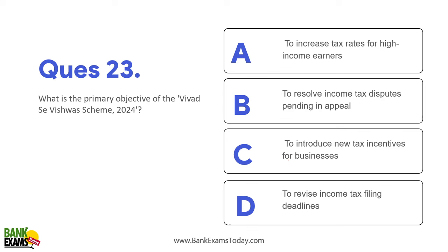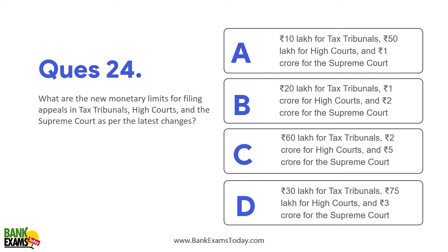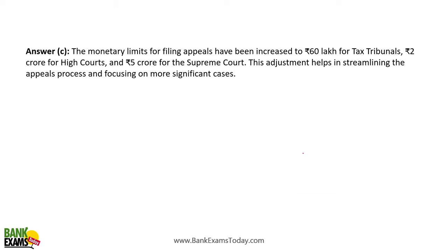The primary objective of the Vivad Se Vishwas scheme is to resolve income tax disputes pending in appeal — a separate session will cover this. What are the new monetary limits for filing appeals in tax tribunals, high courts, and the Supreme Court? As per the latest changes, it is ₹60 lakhs for tax tribunals, ₹2 crores for high courts, and ₹5 crores for the Supreme Court.